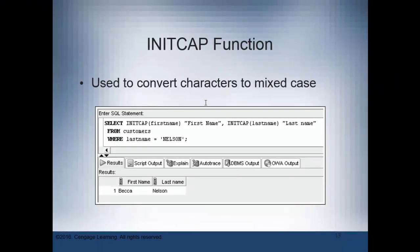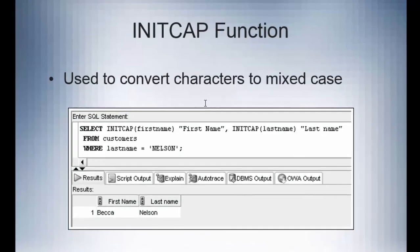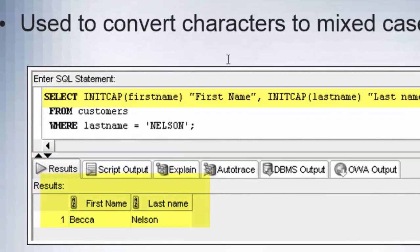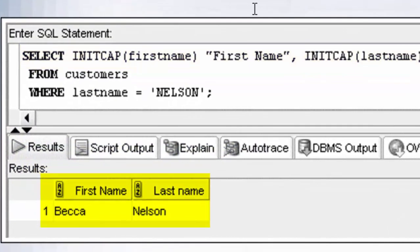The INITCAP function converts characters to initial capitalization. So as we see in this graphic example the INITCAP function is being used with the first name field and with the last name field. So notice the results has Becca with an uppercase B and Nelson with an uppercase N.